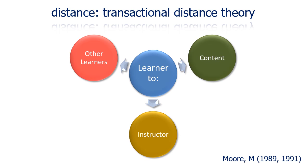Moore's transactional distance theory is similar to the Community of Inquiry model in that it talks about learners' engagement with other learners, content, and the instructor. Transactional distance theory tells us that in any learning context there are gaps or distances that impact engagement and effective learning. When selecting technologies to facilitate teaching and learning, the idea is to keep in mind how those technologies will affect those distances. Will the use of technology increase the distances between the learner and other learners, the content, or the instructor? Or will they effectively bring the learner closer to their peers, content, and instructor?